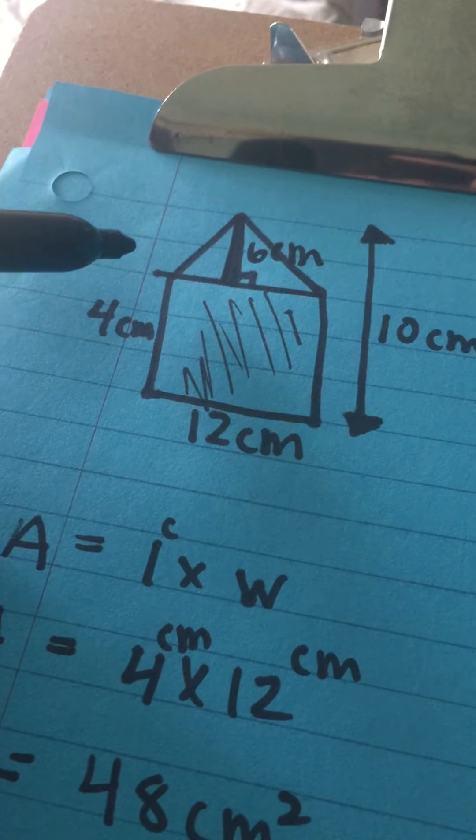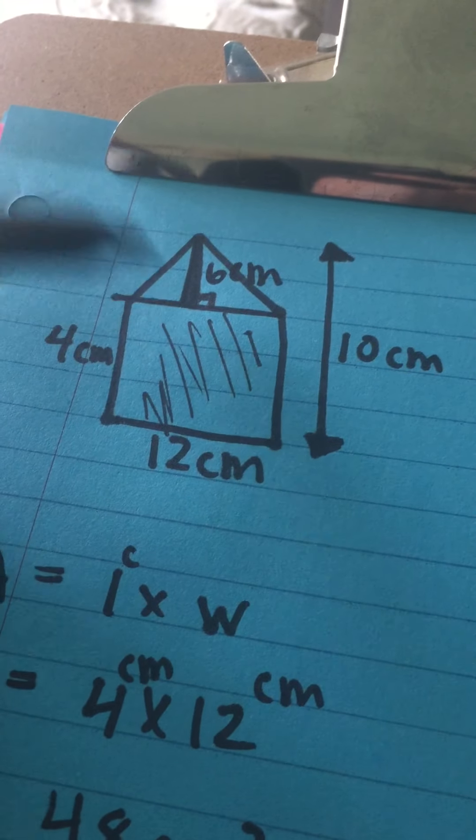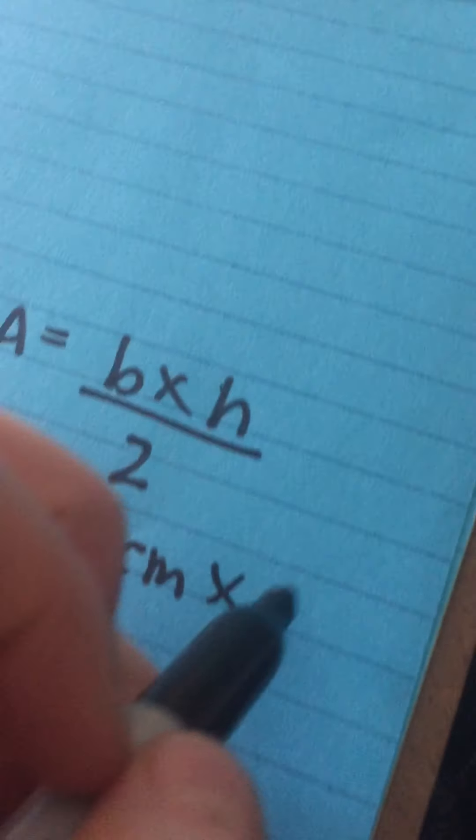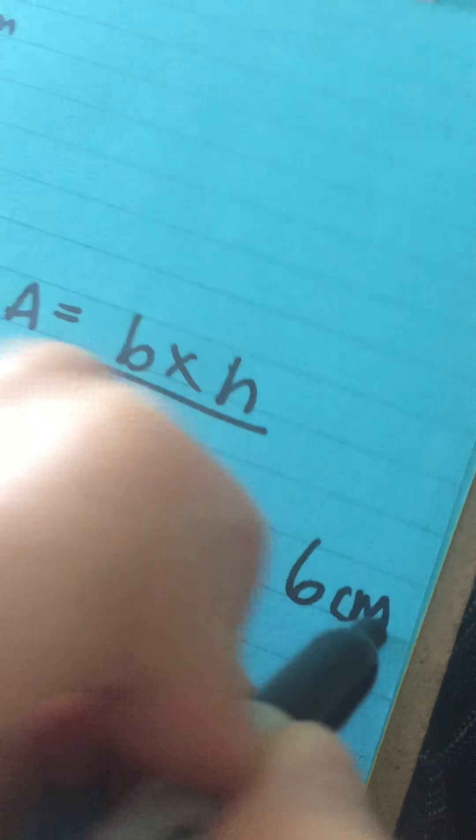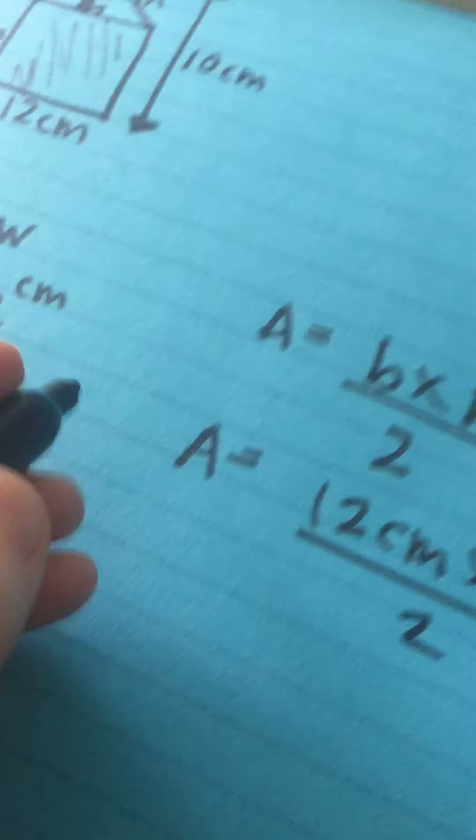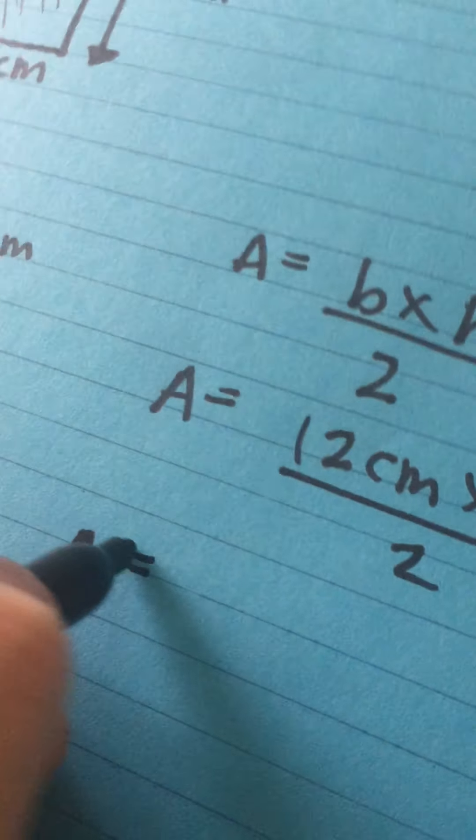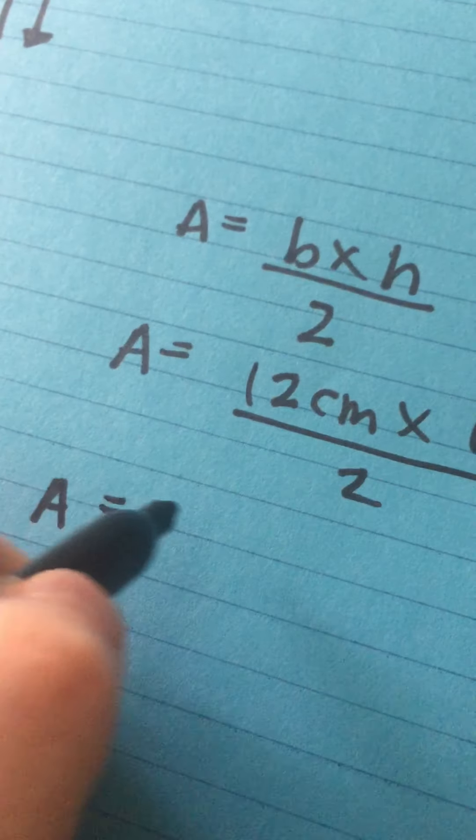Okay, so our base is 12 and our height is 6, so we have all the information that we need. Our base is 12 cm, our height is 6 cm. We have to divide it by 2. So area equals 12 times 6 is 72.